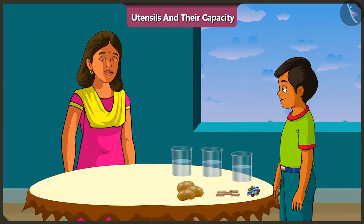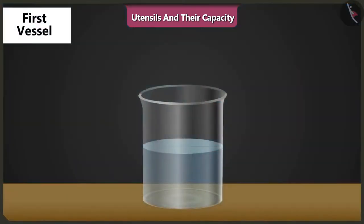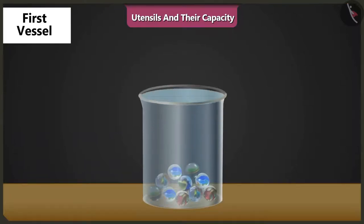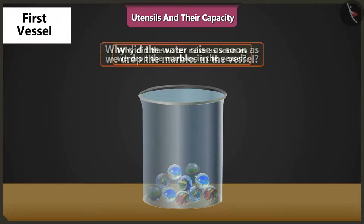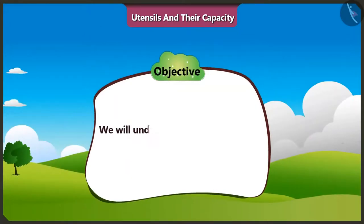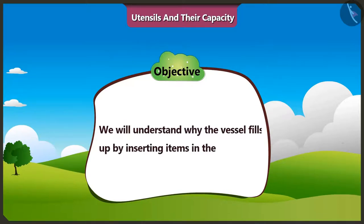Mishtu, what are you doing with water? All these vessels are half full. I am trying to fill them completely without adding more water. And how? See, as soon as I dropped 10 marbles in a vessel half full with water, the vessel got completely filled with water. Mishtu, why did the water rise as soon as we dropped the marbles in the vessel? That's what I cannot understand. Come on, I will explain. Today, we will understand how water level rises in a vessel when we drop objects in it.